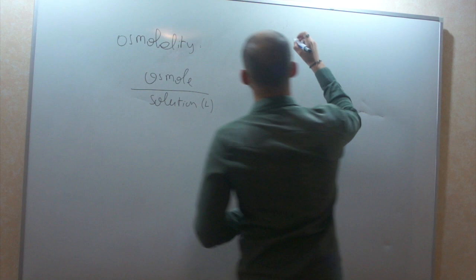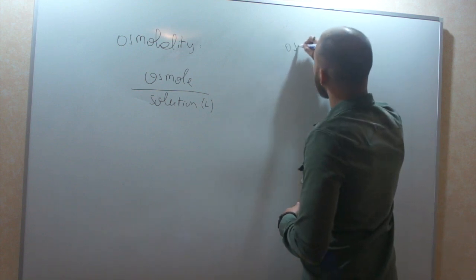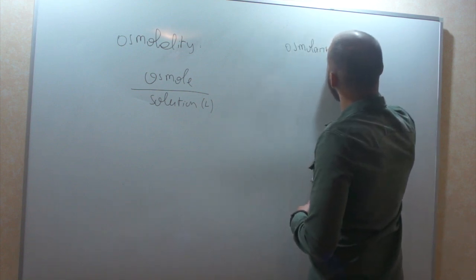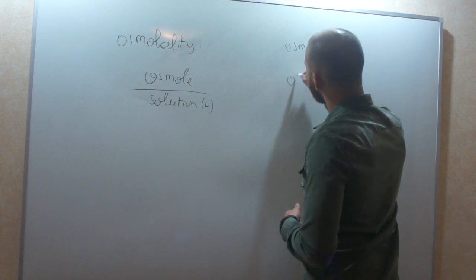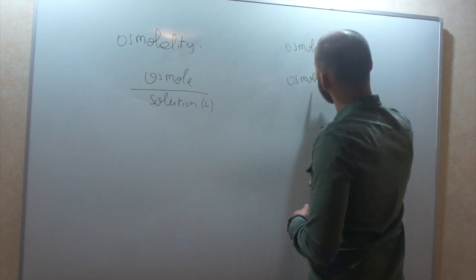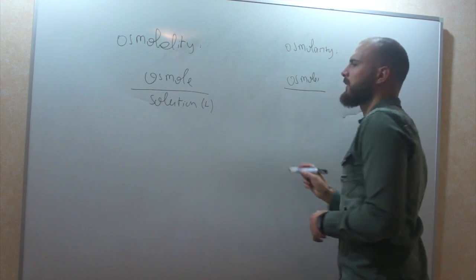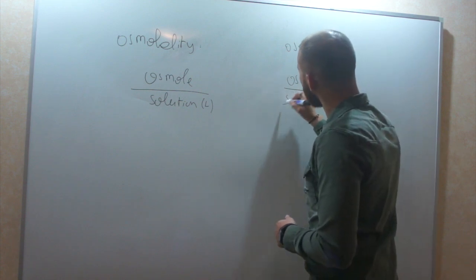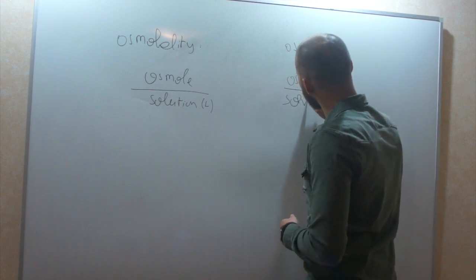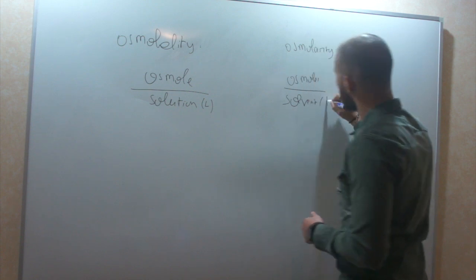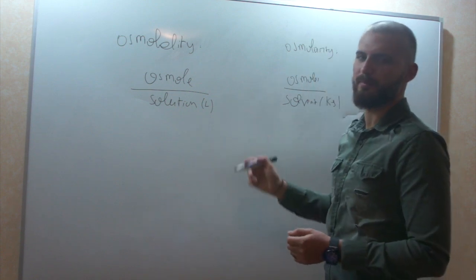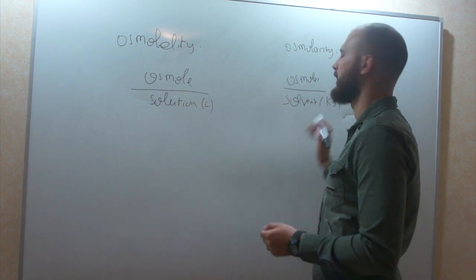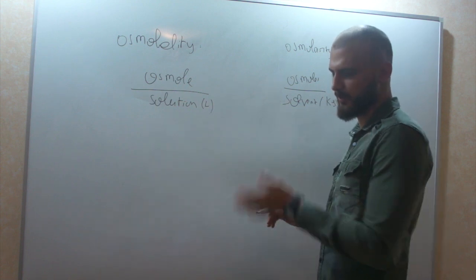Osmolality is the number of osmoles on the quantity of solution in liters. Osmolarity, on the other hand, is the number of osmoles on the quantity of solution in liters. So, solvent per kilogram. So, you may think that the major difference is liters and kilograms. That's not the biggest difference between the two.